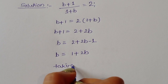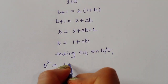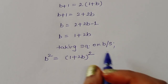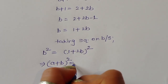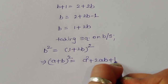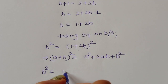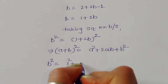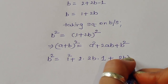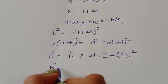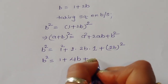Now, taking the square on both sides, we get b² = (1 + 2b)². Using the formula (a + b)² = a² + 2ab + b², we expand: b² = 1² + 2(1)(2b) + (2b)², which gives b² = 1 + 4b + 4b².